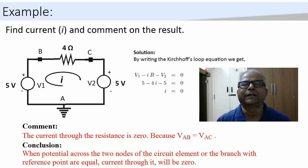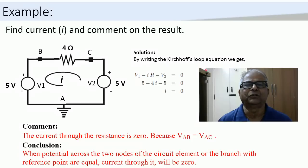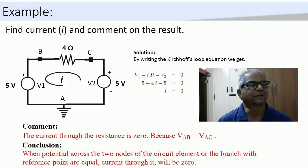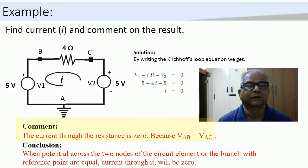Let's now take up a simple example to emphasize the concept that we have learnt. Consider a circuit to find a current of I amperes in a 4-ohm resistance. By writing the Kirchhoff's voltage law equation for the loop, we get I is equal to zero. What does it mean? The current through the resistance is zero because the potential across the two nodes of it are equal.